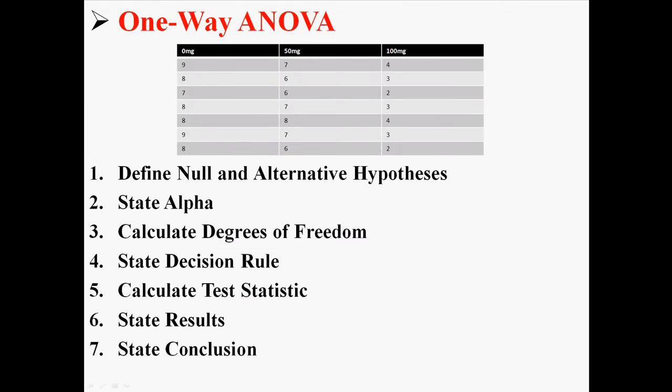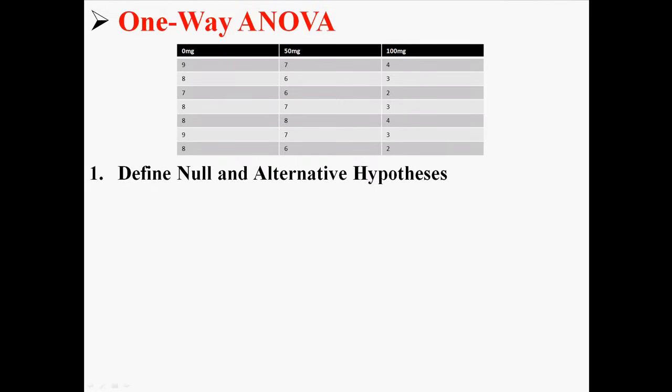So we're going to do an ANOVA using these seven steps. And I've already gone over this a few times, so I'm just going to go right through it. First is stating the null and alternative hypotheses. Now in an ANOVA, our null is that the three groups are equal to one another, and the alternative is that not all the groups are equal.